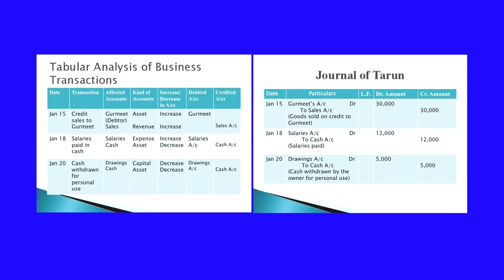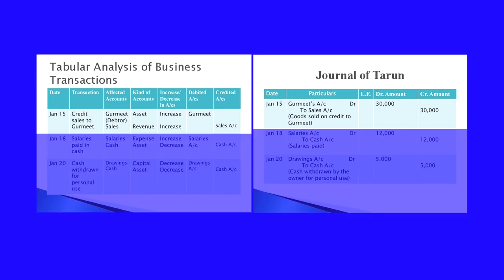On January 15th: credit sales to Gourmet. Goods are sold to Gourmet — Gourmet is a debtor, and sales is the other aspect. The two accounts are Gourmet's account and sales account. Gourmet being a debtor comes under asset account; sales is revenue. When asset increases, that is, debtor increases, you debit that account. When revenue increases as a result of sales, income is increasing, so sales account is credited. The entry is: Gourmet's account debit, to sales account.